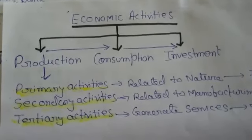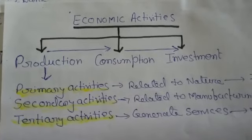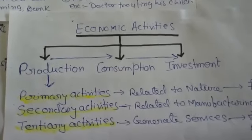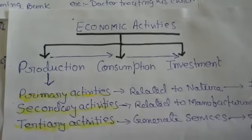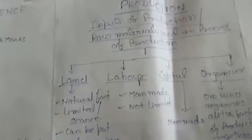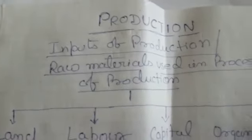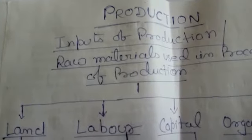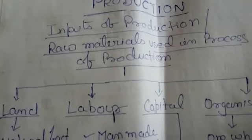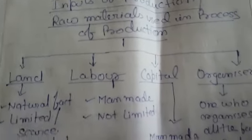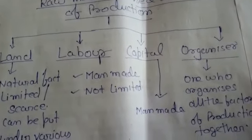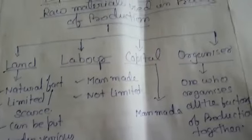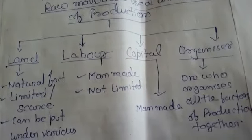One question arises: what is the main difference between tertiary activity and the other two activities? The answer is that tertiary activities generate services, while the other two activities are engaged in producing or manufacturing goods. The main inputs or raw materials of production are land, labor, capital, and organizer.